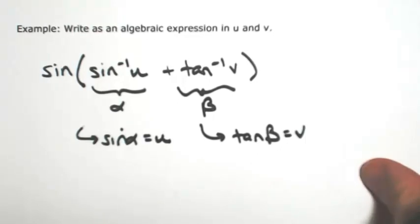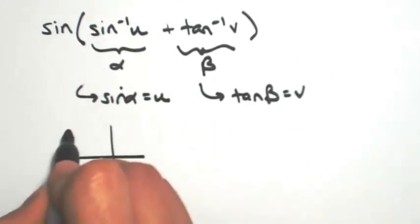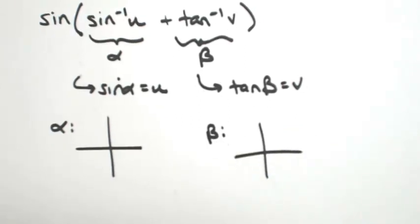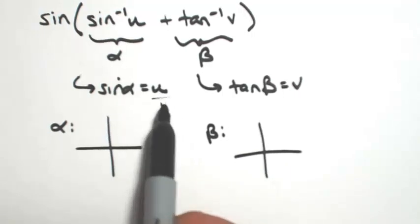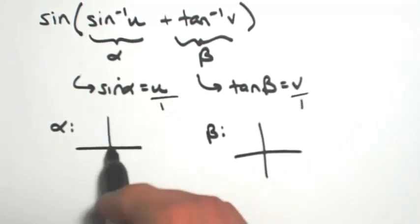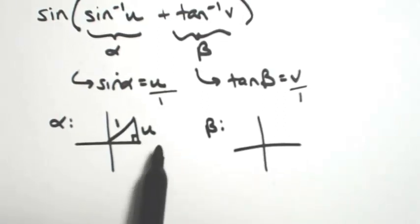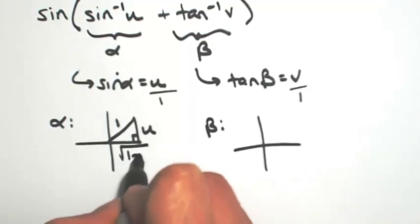So now I'm going to draw the triangles, one for alpha and one for beta. Treating sine as opposite over hypotenuse, u is technically u over 1. So the opposite would be u and the hypotenuse would be 1. To figure out the adjacent side, it's whatever squared plus u squared equals 1 squared, so the adjacent is the square root of 1 minus u squared.